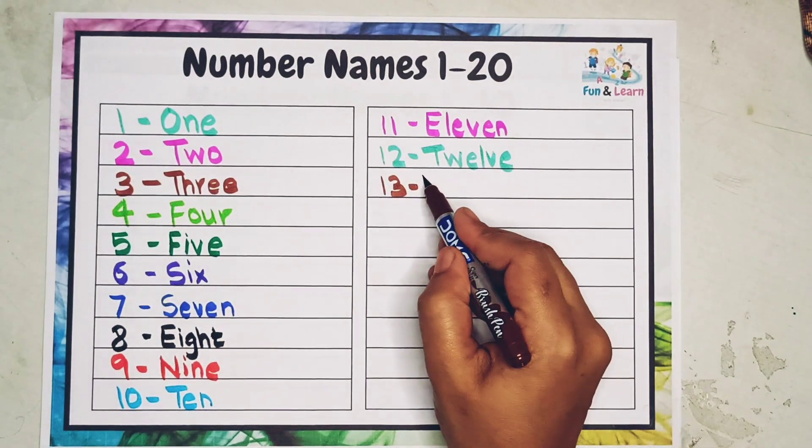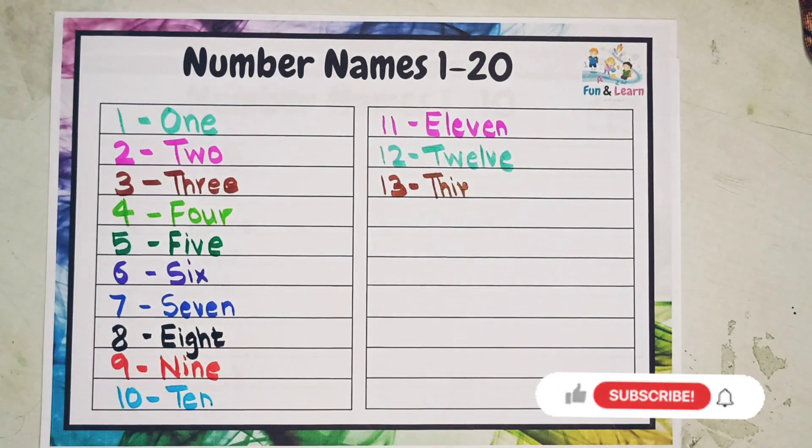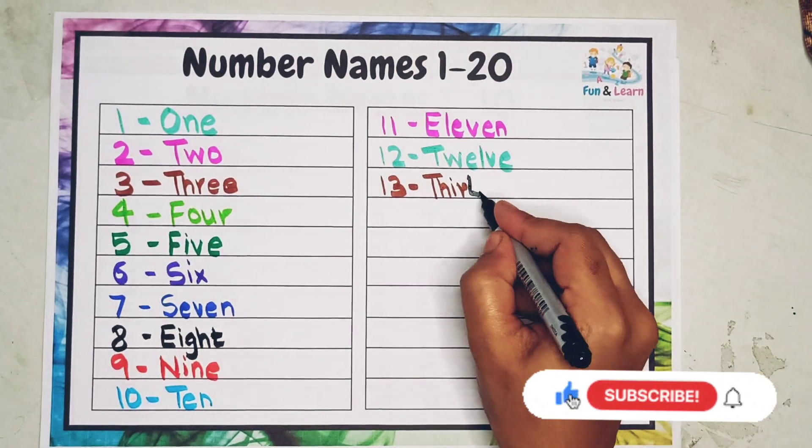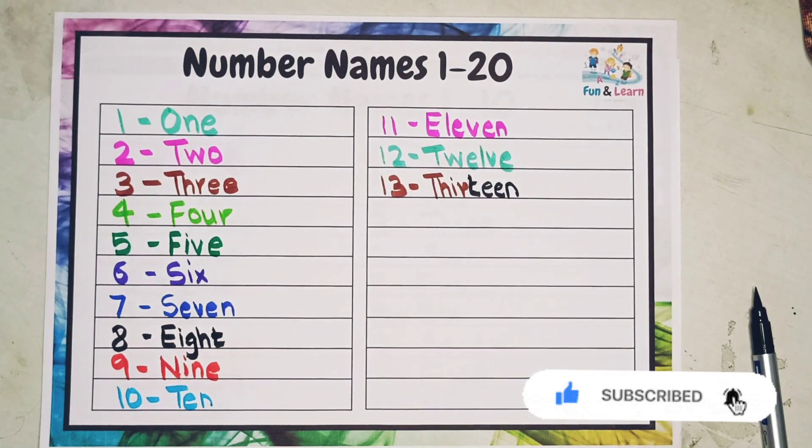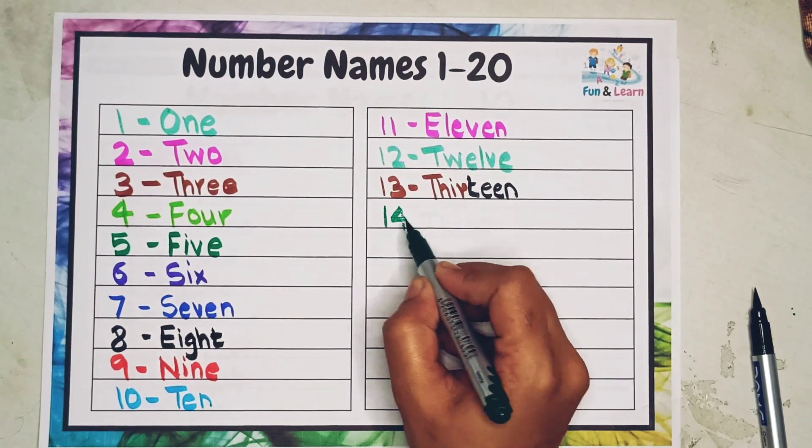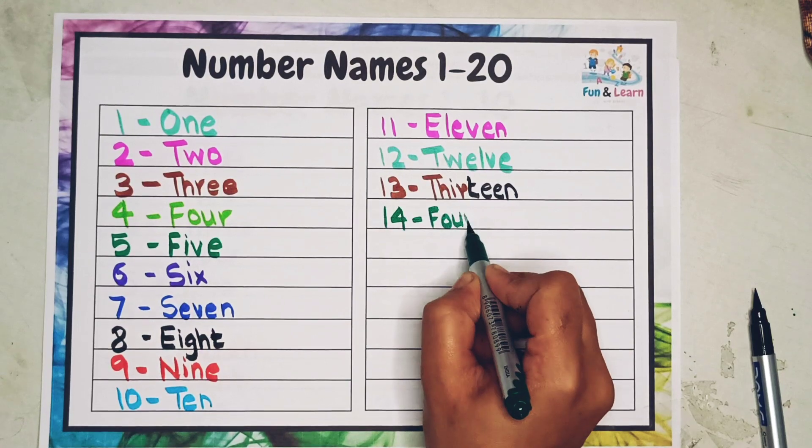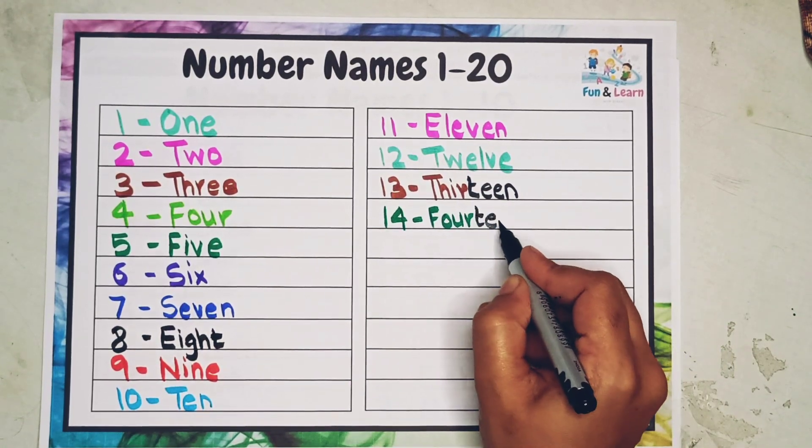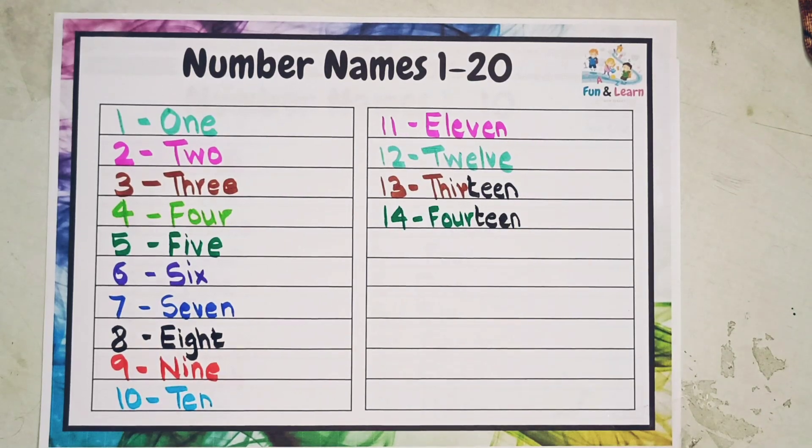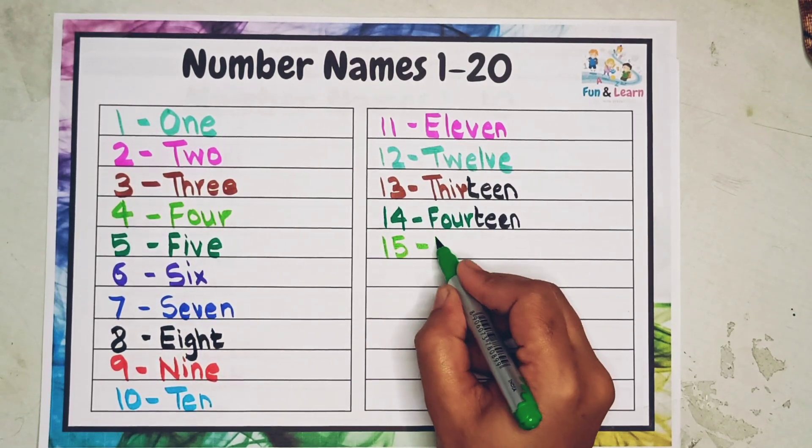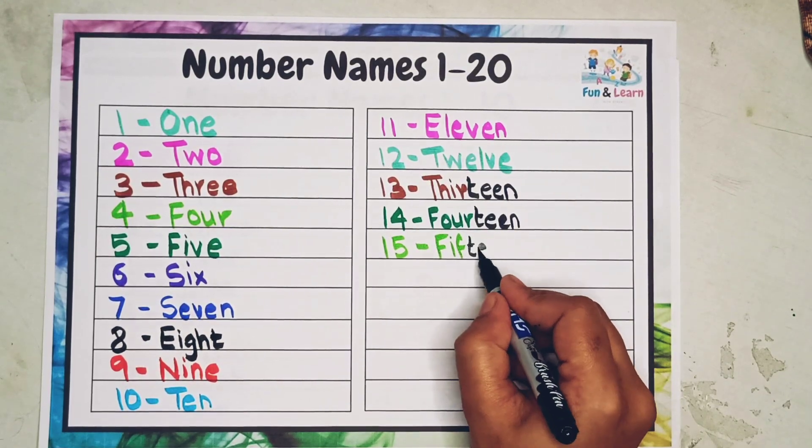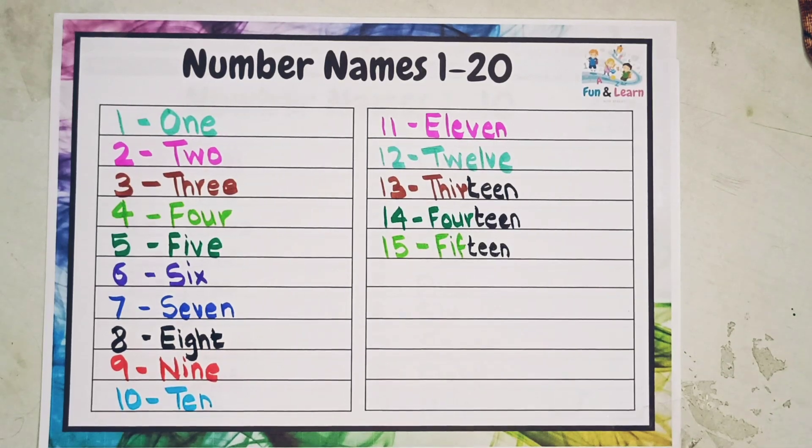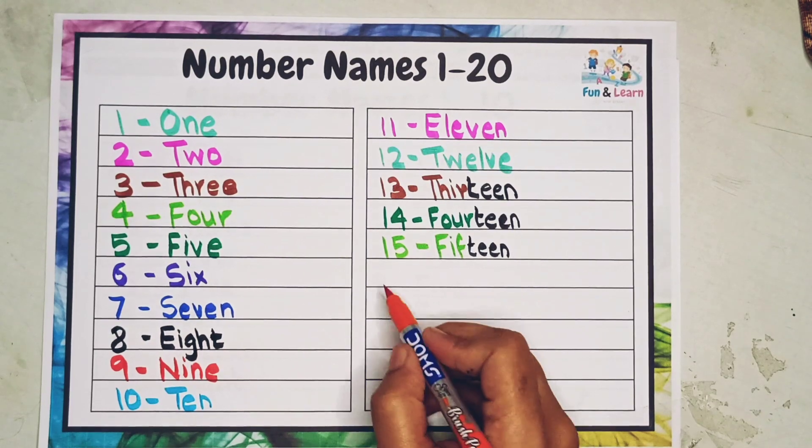After all the numbers comes teen. 13: T-H-I-R-T-E-E-N, thirteen. T-H-I-R-T-E-E-N, thirteen. 14: F-O-U-R-T-E-E-N, fourteen. The next is 15. Remember, it's not fiveteen, it's fifteen: F-I-F-T-E-E-N, fifteen. F-I-F-T-E-E-N, fifteen.